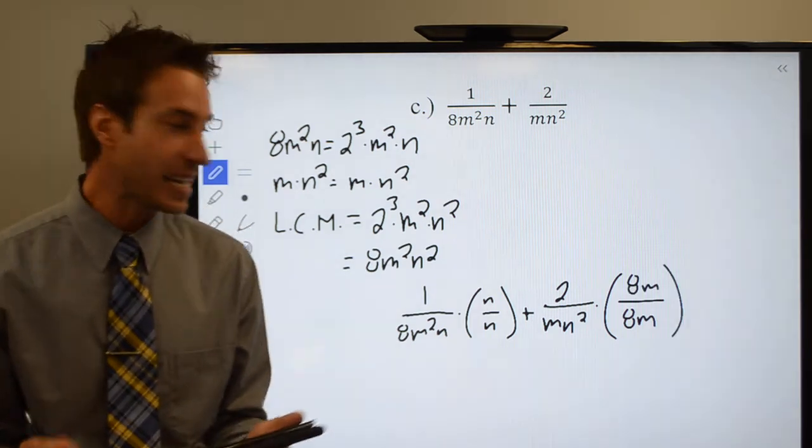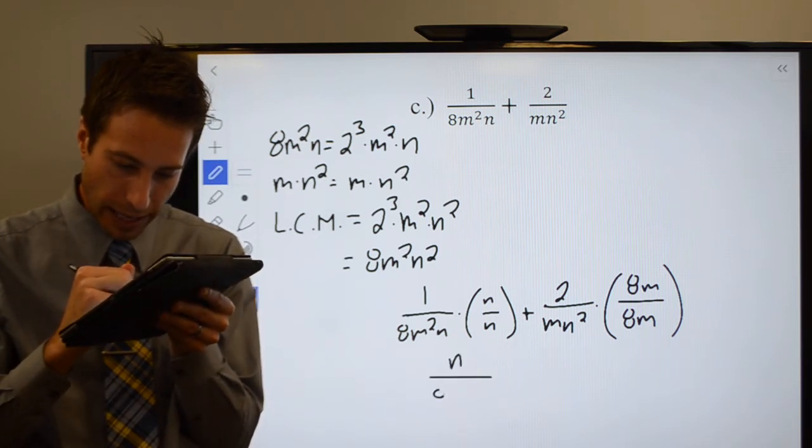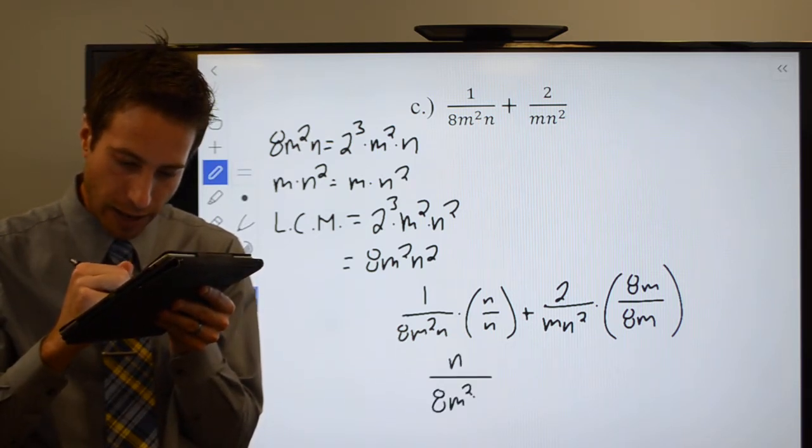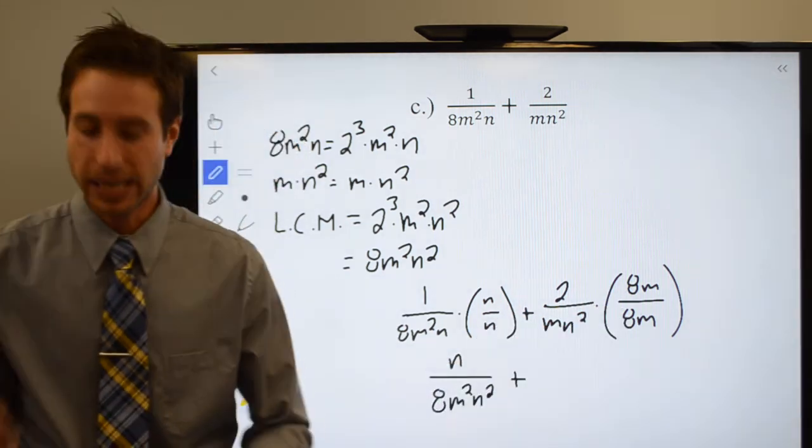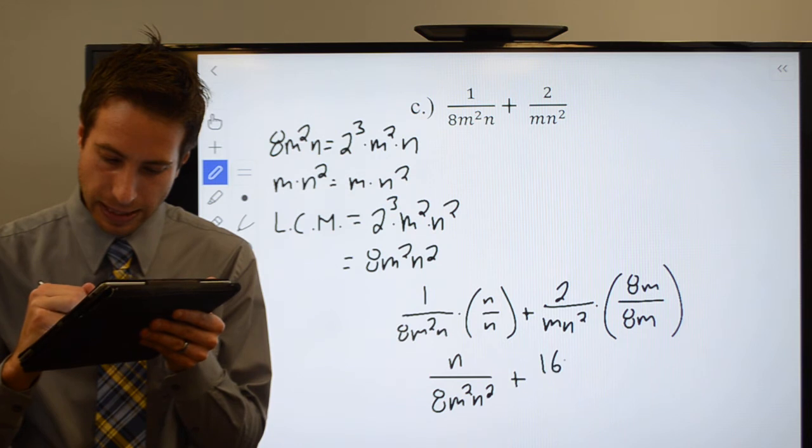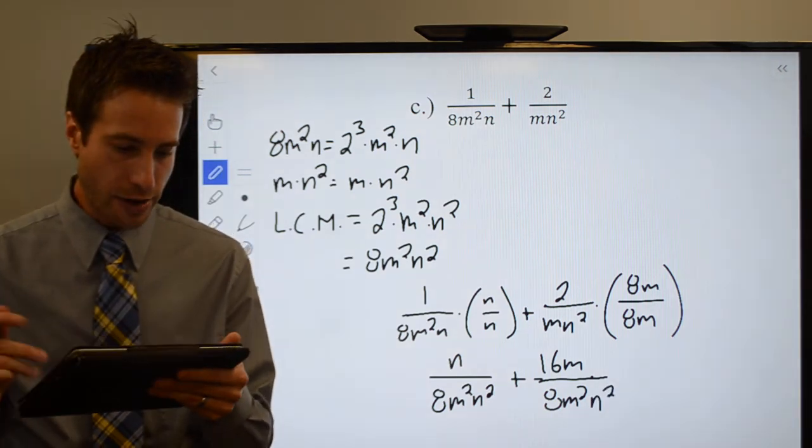Alright, what does that mean? Well, that means that I'm going to have N over 8M squared N squared plus 2 times 8 is going to be 16, 16M all over 8M squared N squared. And you're almost done.